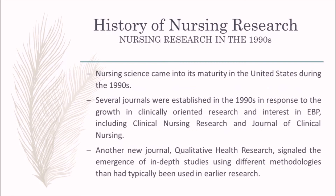Nursing science came into its maturity in the United States during the 1990s. Several journals were established in response to the growth in clinically oriented research and interest in evidence-based practice, including Clinical Nursing Research and Journal of Clinical Nursing. Another new journal, Qualitative Health Research, signaled the emergence of in-depth studies using different methodologies than had been used earlier.